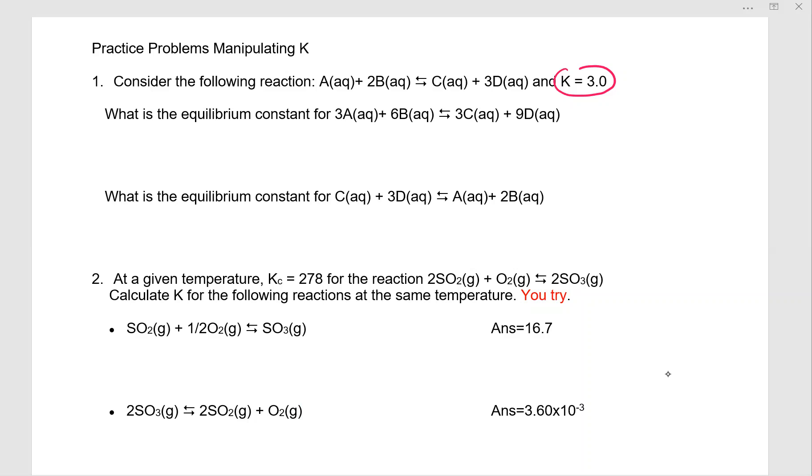Everything's written in the same order, but we've multiplied everything times 3. So we're going to use the rule that K new equals K old raised to whatever the power is. So this is going to be 3 raised to the third, which is 27.